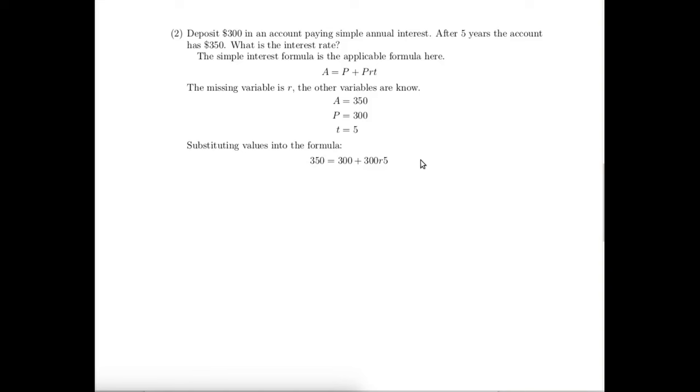So there we are with the values substituted in, and what we need to do is solve for R. We're just going to subtract 300 from both sides, divide both sides by the right amount. An obvious first step is to multiply this 300 times 5, giving us this equation. Subtract 300 from both sides, divide both sides by 1500, and then this is just a calculator problem.